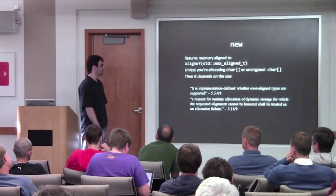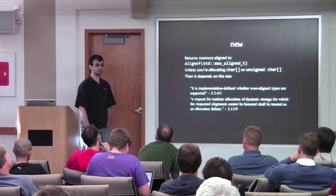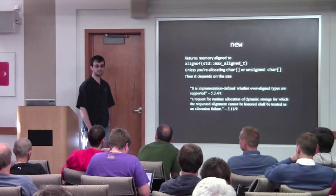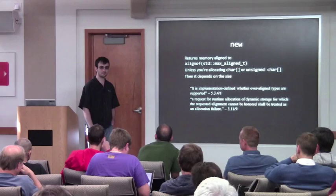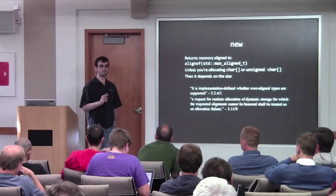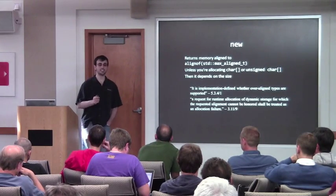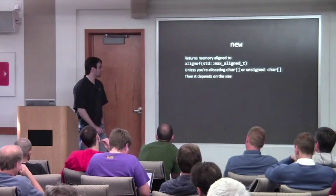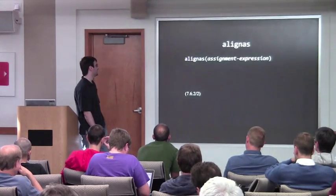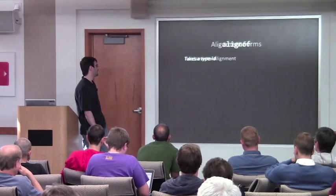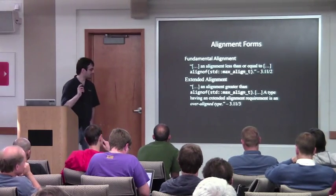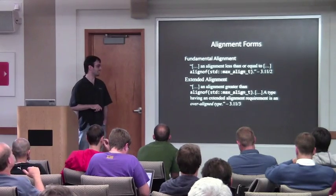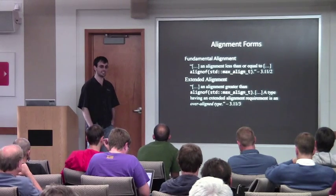In reality, when you are allocating an over-aligned type with `new`, you will most likely not get that alignment. You may accidentally get it, but you're not likely to. Q: Is an over-aligned type one that has an alignment greater than `max_align_t`? A: Yes — the only extended alignment is if it's greater than `max_align_t`. If you assign an alignment less than that, it is not an extended alignment or over-aligned type — it is a fundamentally aligned type.